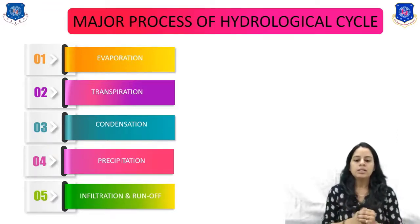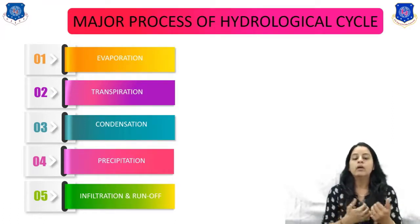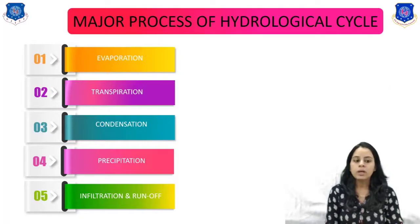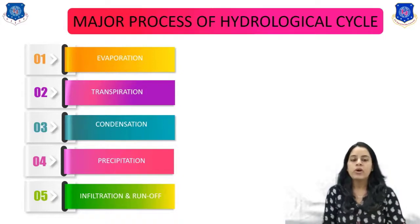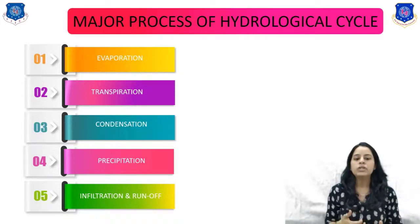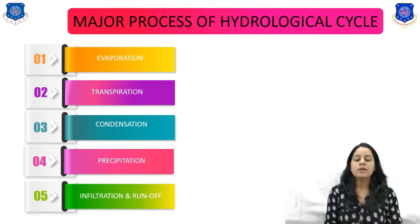Transpiration is a biological process that occurs mostly during the day, where water inside plants is transferred to the atmosphere as water vapor, and only a small portion is retained by the plant. Condensation is the process by which water vapor changes back into water. Water vapor condenses to form dew, fog, or clouds due to the cooling of air.